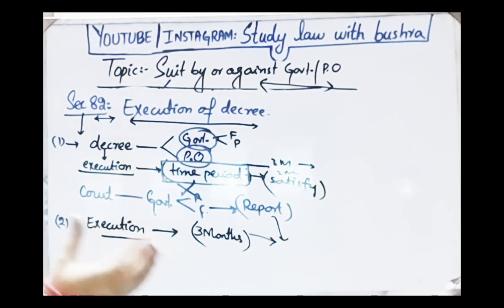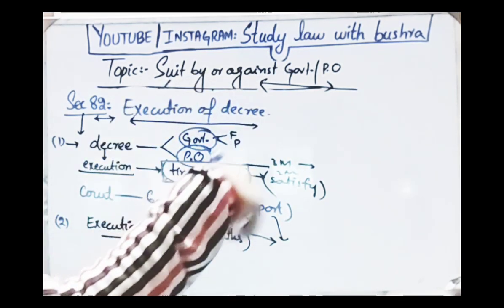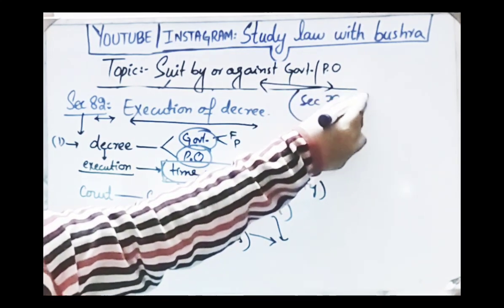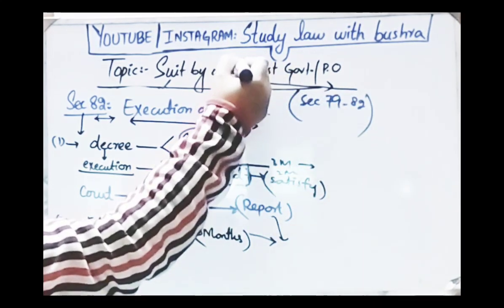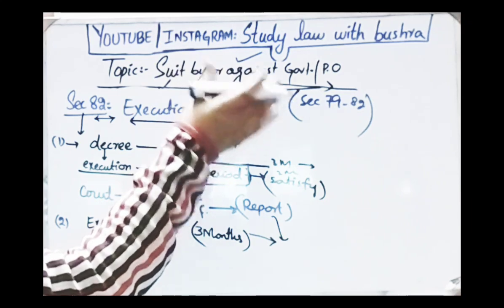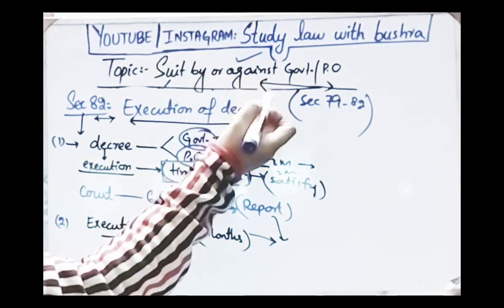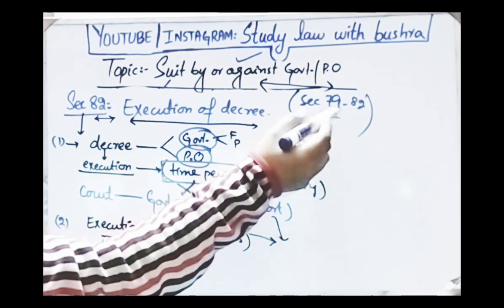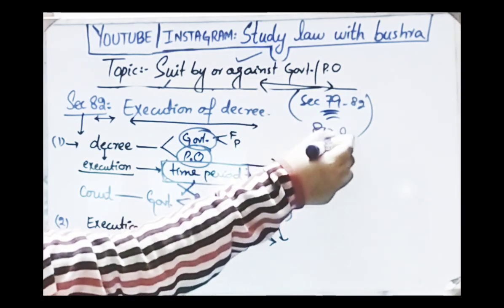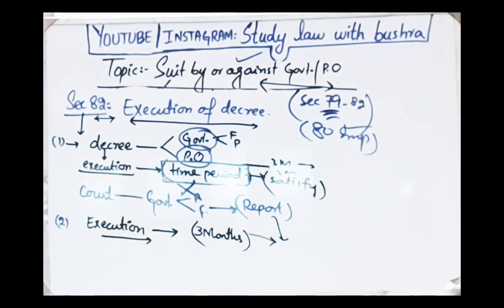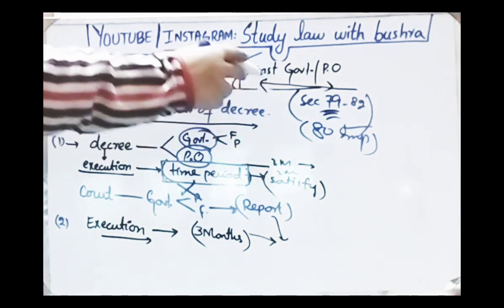So section 82 was a simple topic — execution of the decree. When a decree is passed in a government or public officer case, a time period is mentioned in the decree. If the decree is not satisfied within the prescribed time period, a report is sent to the government, and the government issues further orders. This was our today's discussion on sections 79 to 82, covering what procedure applies when filing a suit by or against the government or public officer. Section 80 was the most important section in this regard.